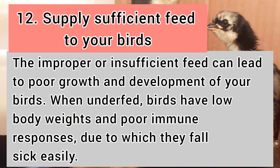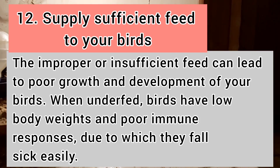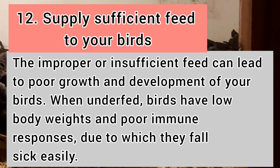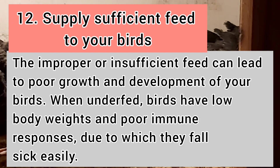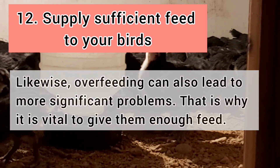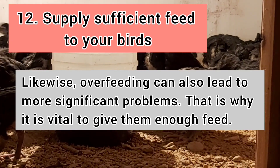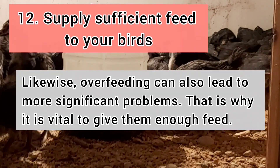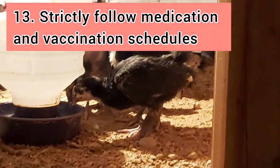Number twelve: supply sufficient feed to your birds. Improper or insufficient feed can lead to poor growth and development. When underfed, birds have low body weights and poor immune responses, causing them to fall sick easily. Likewise, overfeeding can also lead to more significant problems, so it is vital to give them the right amount of feed.